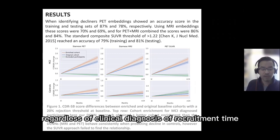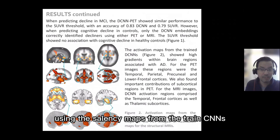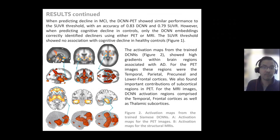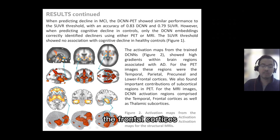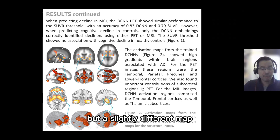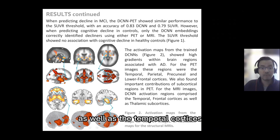We decided to unveil this pattern using the saliency maps from the trained CNNs using the images during training. For the PET images, the regions most associated with a future diagnosis of AD were the temporal cortices, the frontal cortices, and the precuneal cortices. In a similar fashion, but with a slightly different map, the MR showed that the most significant regions for a future diagnosis of AD were the frontal cortices, the subcortical regions, as well as the temporal cortices.